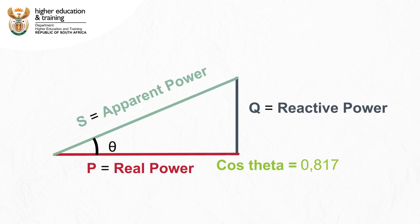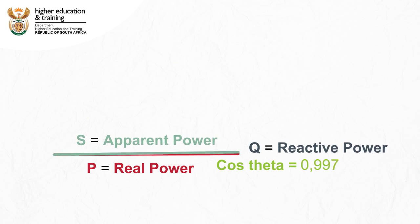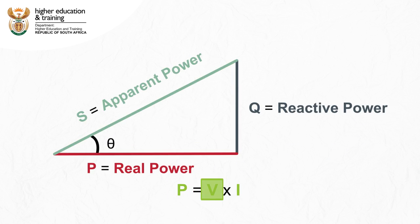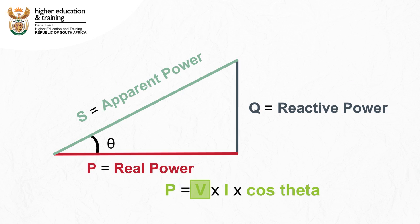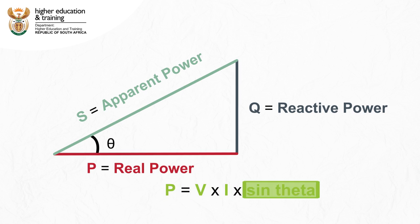The smaller we make theta, the closer the value of cosine theta gets to 1. Whenever you calculate power as voltage times current, you are assuming a power factor of 1 — in other words, no reactive power in the circuit. Almost always though, there is some reactive power, so the power factor is less than 1. Therefore, active power, or just power for short, is voltage times current times the cosine of theta. Reactive power can also be calculated from this triangle if need be. Reactive power is equal to voltage times current times the sine of theta.